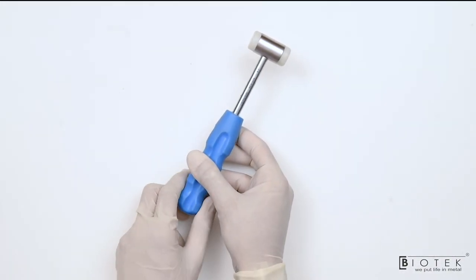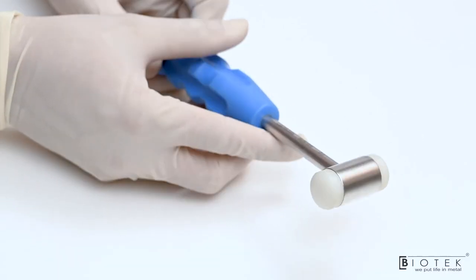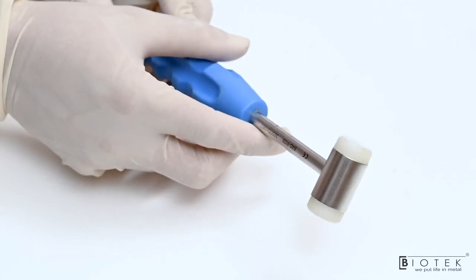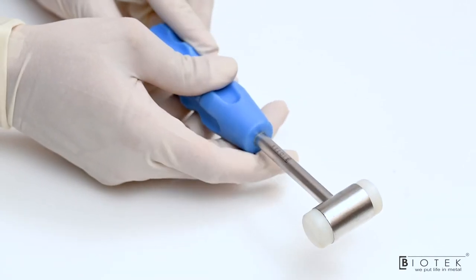This is hammer. It is used for insertion of punch and the punch tap inside the bone and for the anchor insertion.